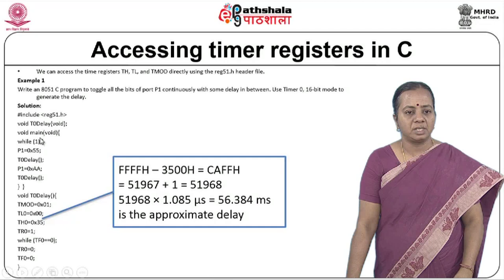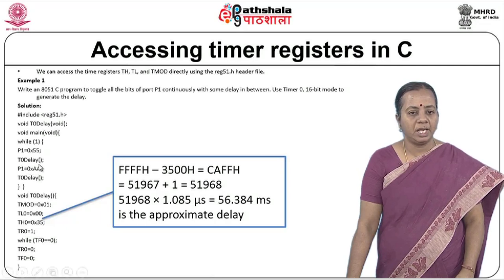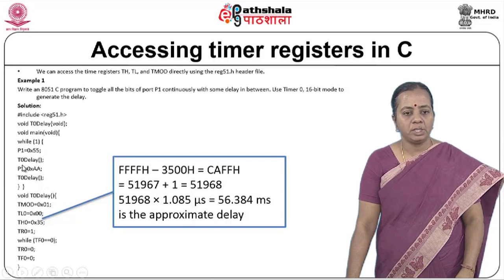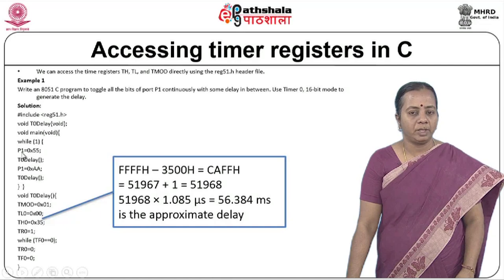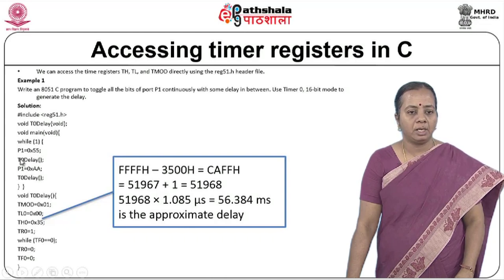The delay subroutine is declared first, then the main function is declared with while(1) generating an infinite loop. P1 = 0x55, which means the bit pattern is 10101010. A delay is called, then P1 = 0xAA, which means 01010101 — toggling the LEDs connected at port 1. Remember that in embedded C you can call the ports directly: P1 refers to port 1. The value 0x55 moves that pattern to the LEDs connected in parallel at port 1.